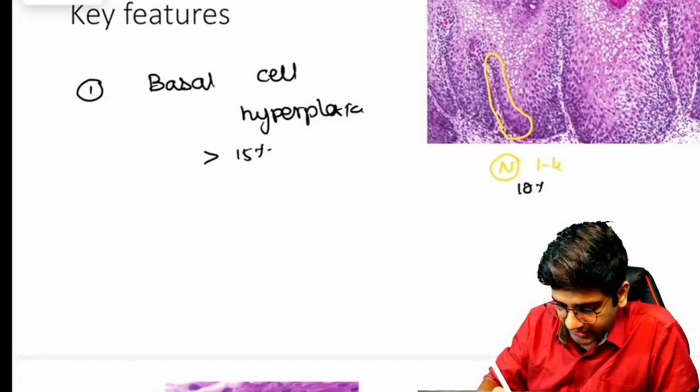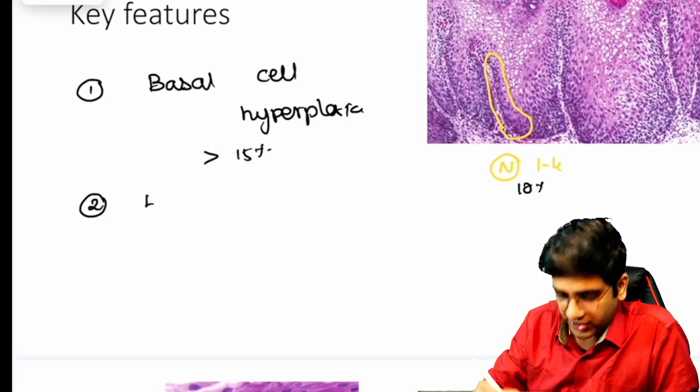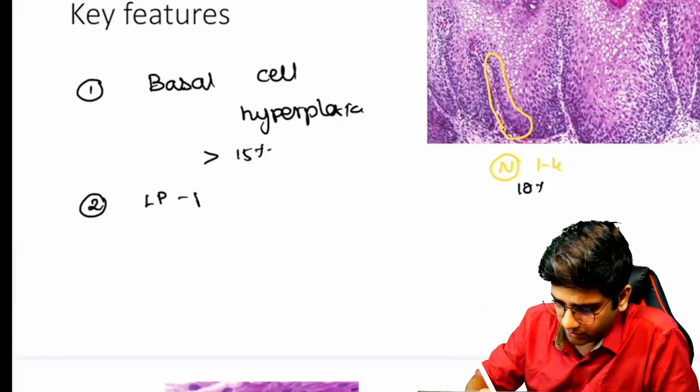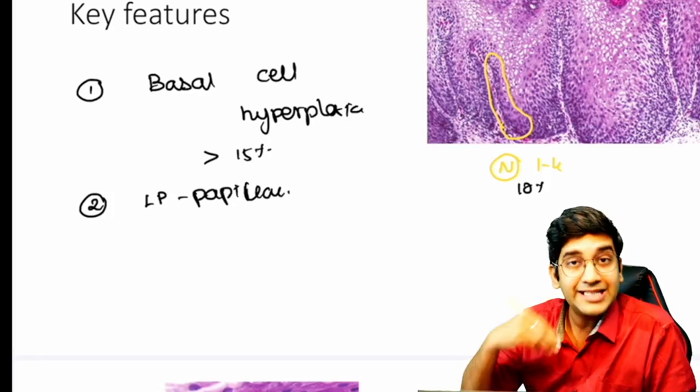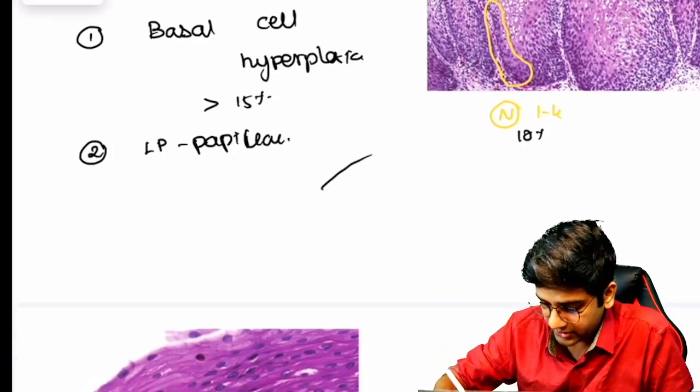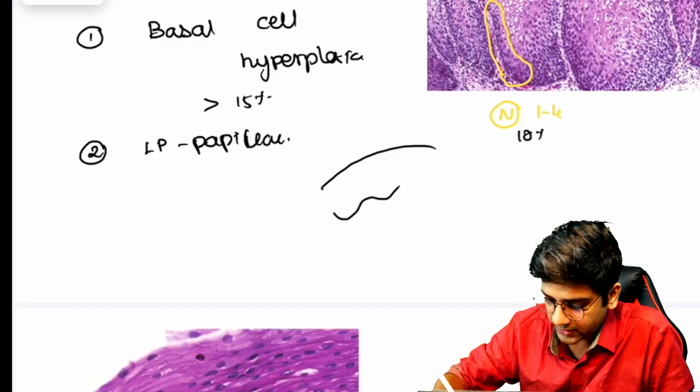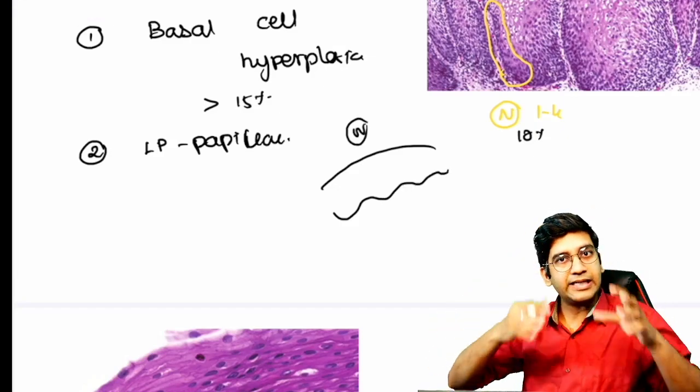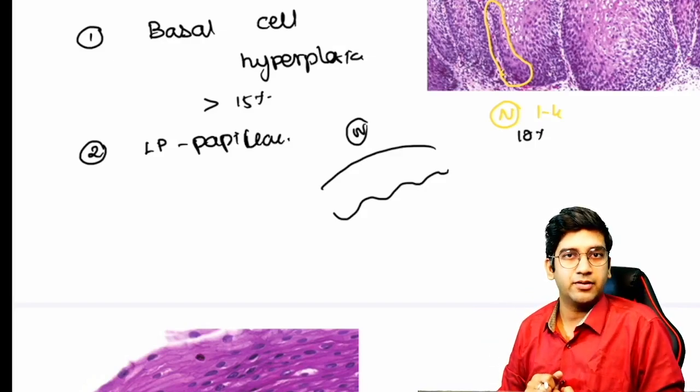Whenever there's lots of hyperplasia, what happens second is your lamina propria elongation, or the rete ridges kind of thing. It becomes elongated. So the lamina propria papillary appearance will be there. The lamina propria elongation will be there. I'll just give you a brief overview of what I mean by this. Normally esophagus is going to be like this; I won't have a deep indentation like what you see in skin.